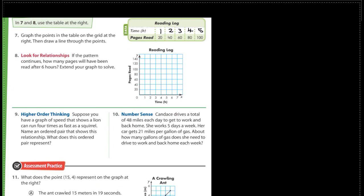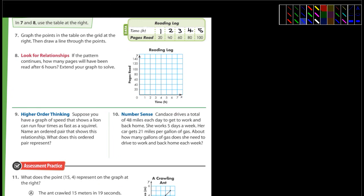So let's move down here. Next page. Number seven: graph the points in the table on the grid at the right and then draw the lines through the points. Mine didn't come through very well so I actually ended up writing those in. It says look for relationships. If the pattern continues, how many pages will have been read after six hours? Yeah, I think you guys can do that.